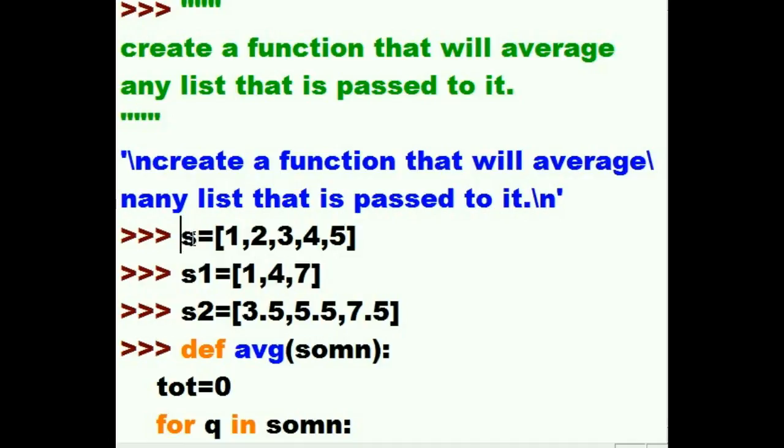So I'm going to pass it one of these guys, it's going to get caught in here, and I'm going to walk through this. First q will have 1, then q will have 2, then q will have 3, then 4, then 5. It's going to walk through s, which is passed to something, q walks through something.